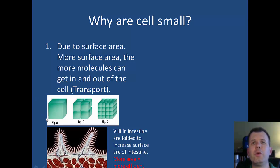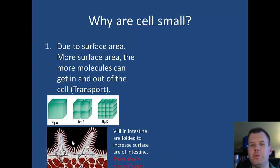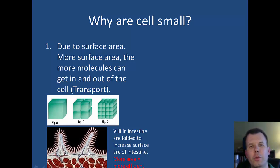More surface area equals more efficiency, and our bodies do the same thing. Think of our intestines — they aren't just hollow tubes. They actually have lots of ridges on the inside, and those ridges increase the surface area. More surface area allows you to absorb more food and more nutrients. We actually have villi inside our intestines so we can absorb more food. So that's one of the reasons cells are small: more surface area.